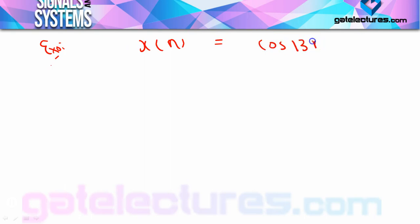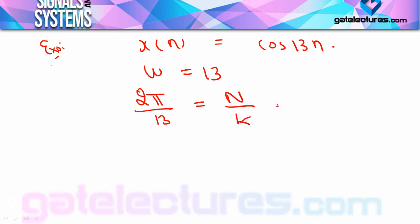Now consider x[n] = cos(13n). Here ω = 13, so 2π/13 = N/k. You can see that N can never be an integer for any integer value of k, because π cannot be cancelled when k can only be an integer. Therefore, this signal is non-periodic.